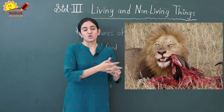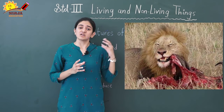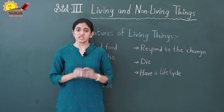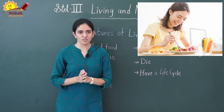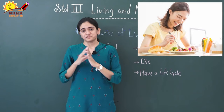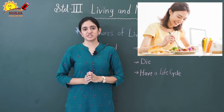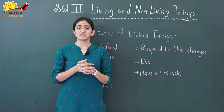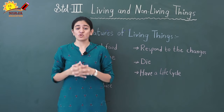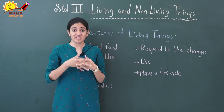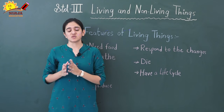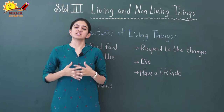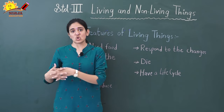The animals which eat the flesh of other animals are known as carnivorous animals. The animals which eat both plants and flesh are known as omnivorous animals — for example, we humans are omnivorous. Plants also need food, but they are not dependent on others — they prepare their own food through the process of photosynthesis. Some plants are dependent on decaying material and those are known as saprophytes.